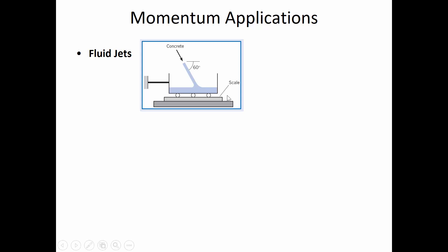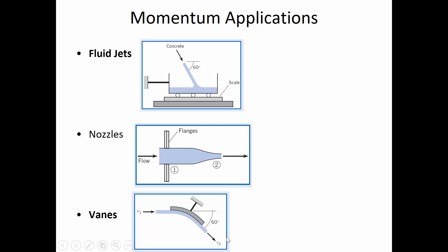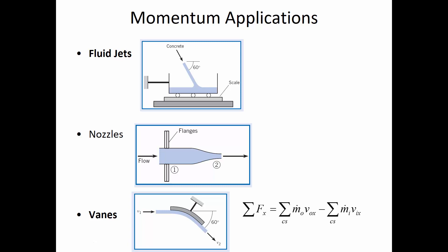Here's the typical problem types having to do with momentum. We're working with jets of fluid, vanes — which is an application of a jet where some fluid stream is being redirected so its direction is changing — and then nozzles. Today we'll talk about jets and vanes; we won't get to nozzles until Thursday. All three of these problem types use the same form of the momentum equation. The left-hand side of this equation is the sum of the forces required to hold the system steady — the external force that has to be applied to hold the system stationary — and it has to do with the sum of the mass flows out minus the sum of the mass flows in.